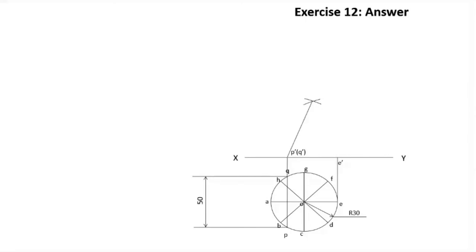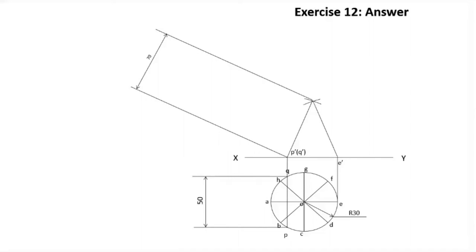We join P-dash Q-dash with the newly found point of intersection. This distance is 70 millimeters, and this side is also 70 millimeters. Then we draw the projector for the apex.